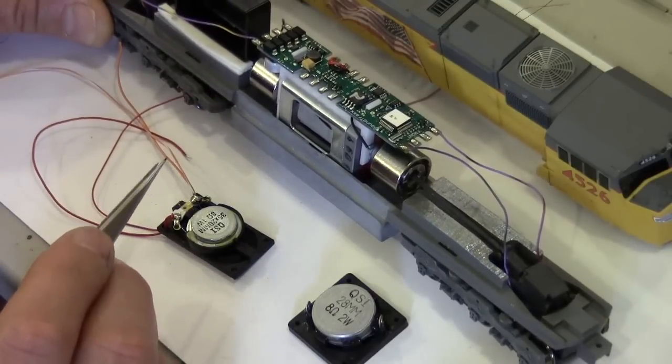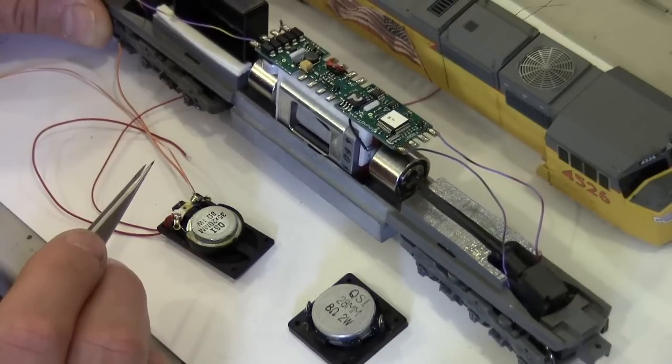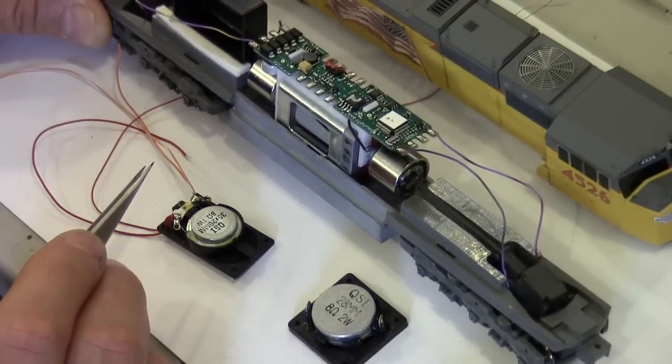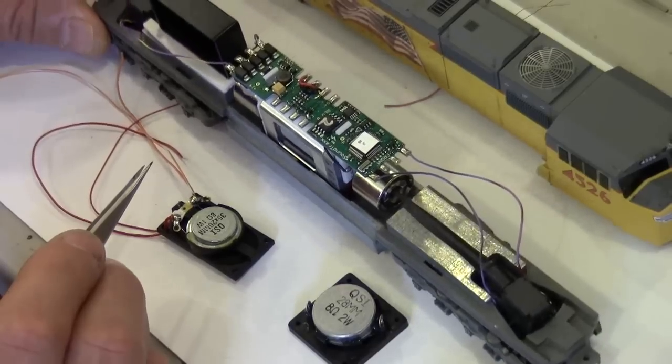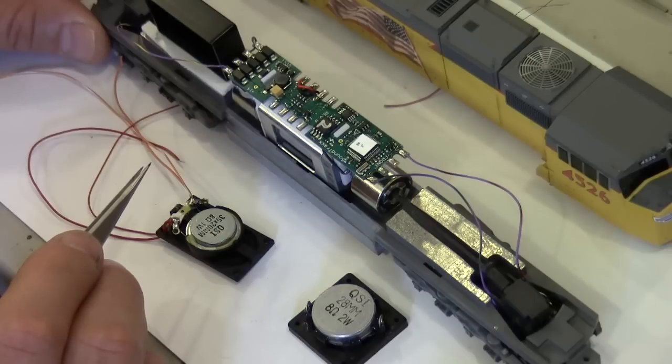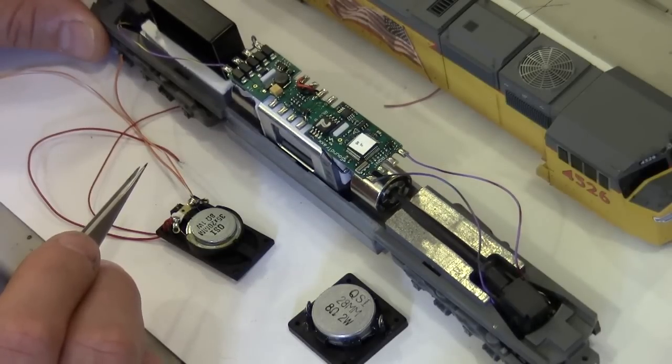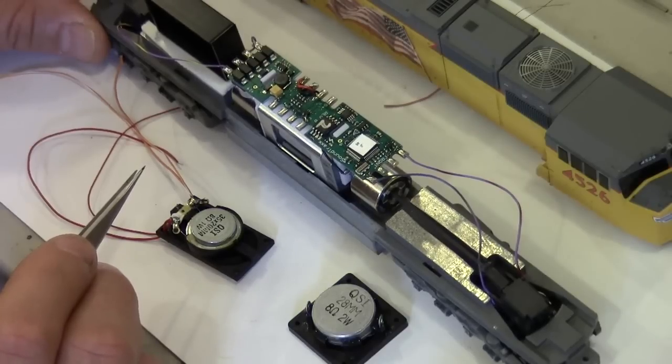And by the time I'm done, usually I can stuff back about six to eight ounces of lead weight back inside the frame and shell, which makes it almost about four ounces heavier than the stock model. So it's a really good pulling heavy locomotive when I'm finished.